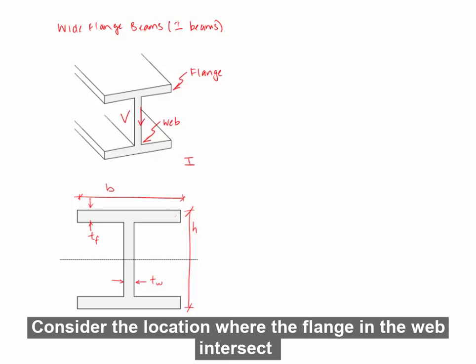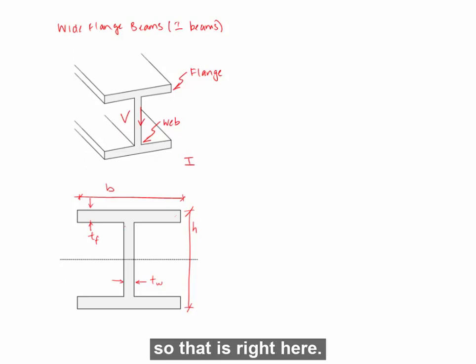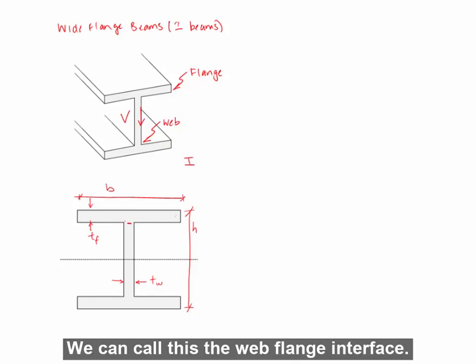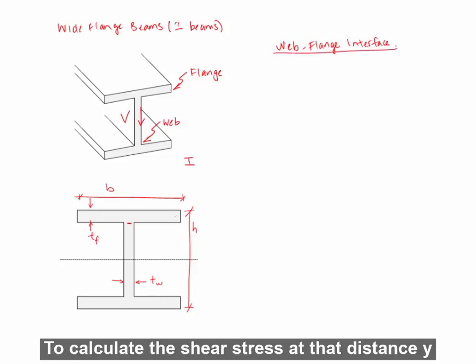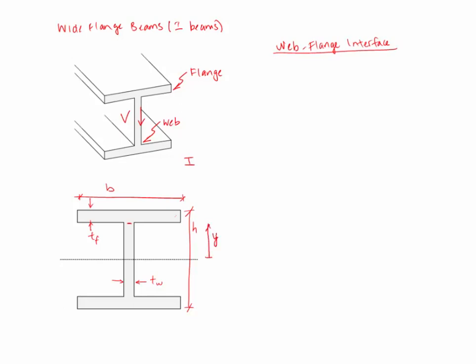Consider the location where the flange and the web intersect. So that is right here. We can call this the web flange interface. To calculate the shear stress at that distance, Y, we section at that point.